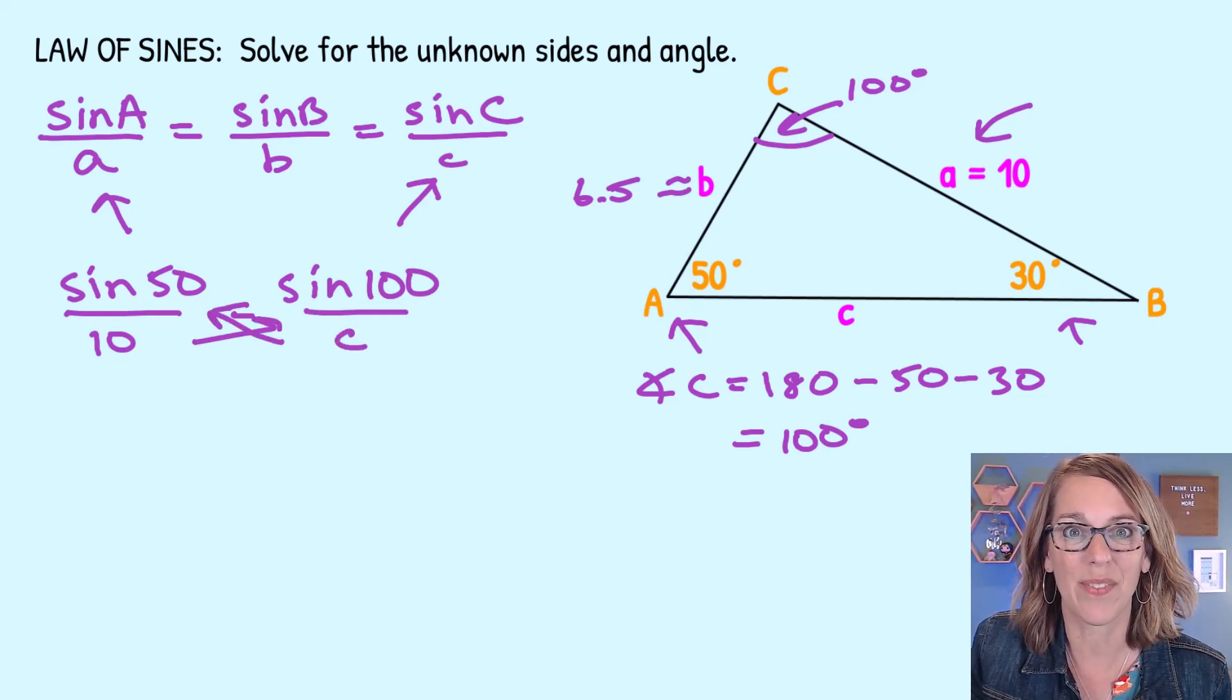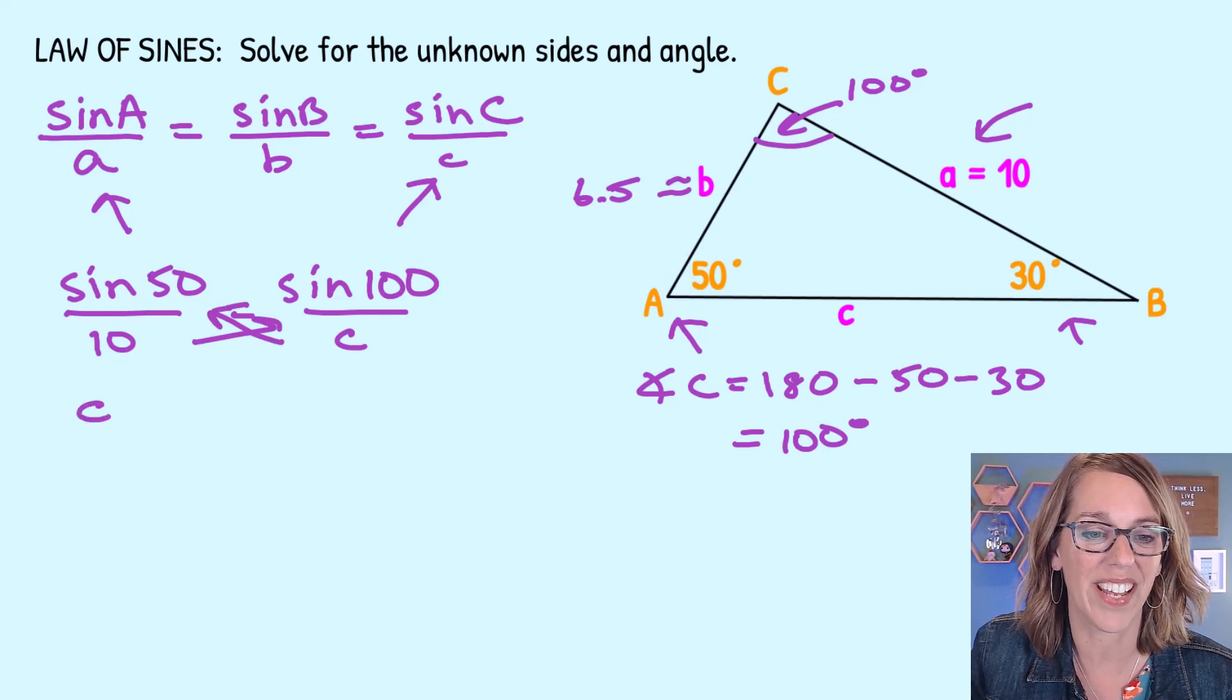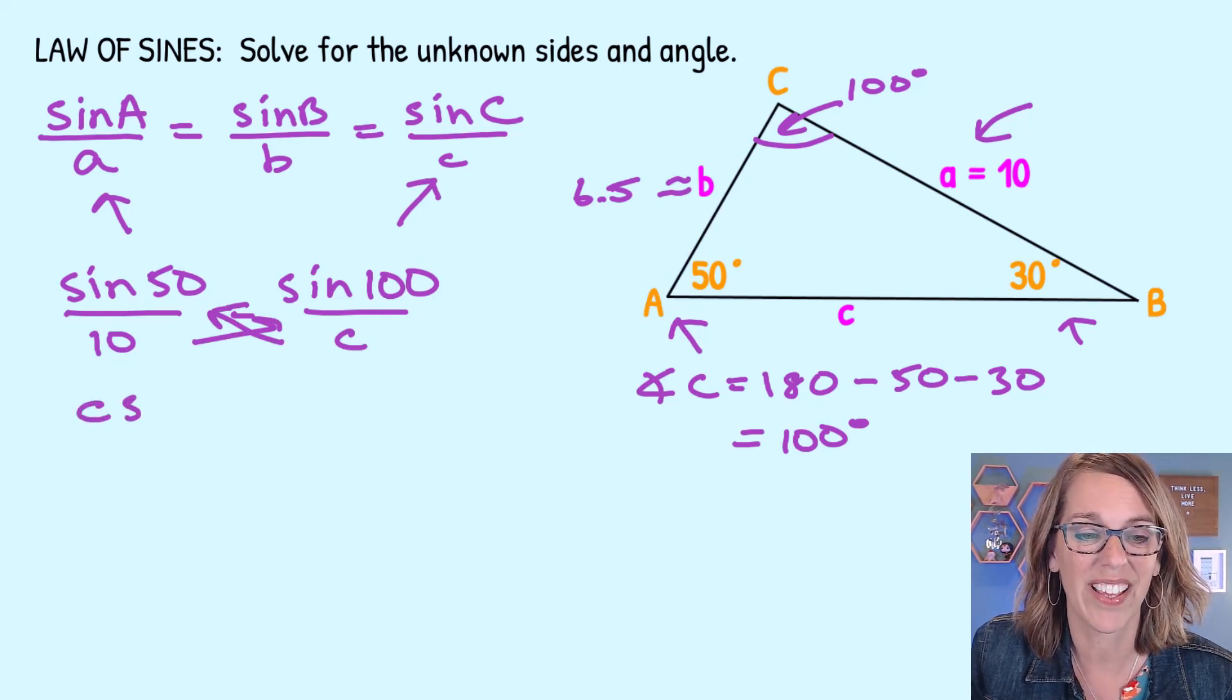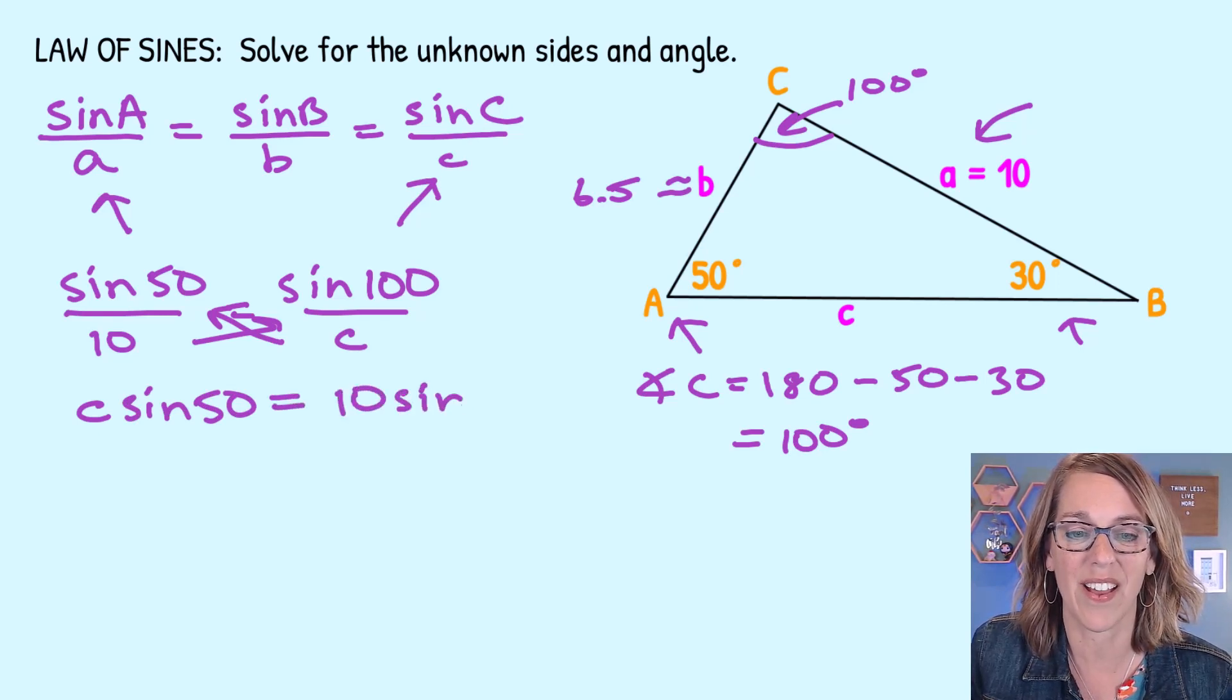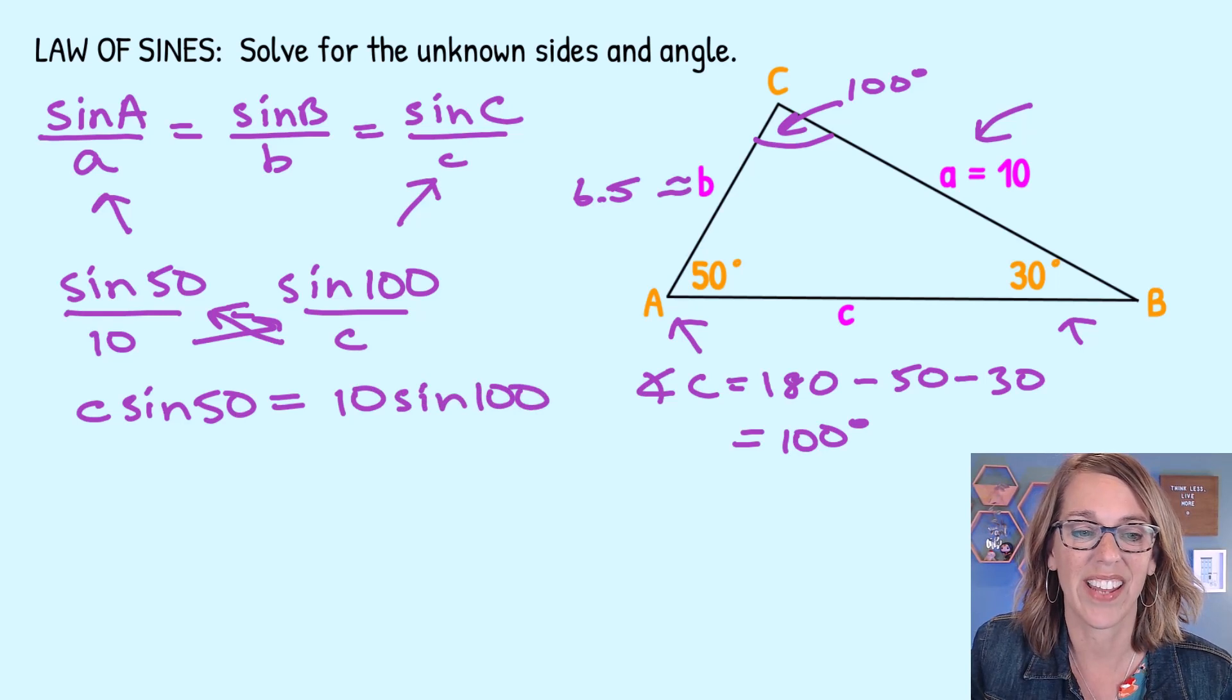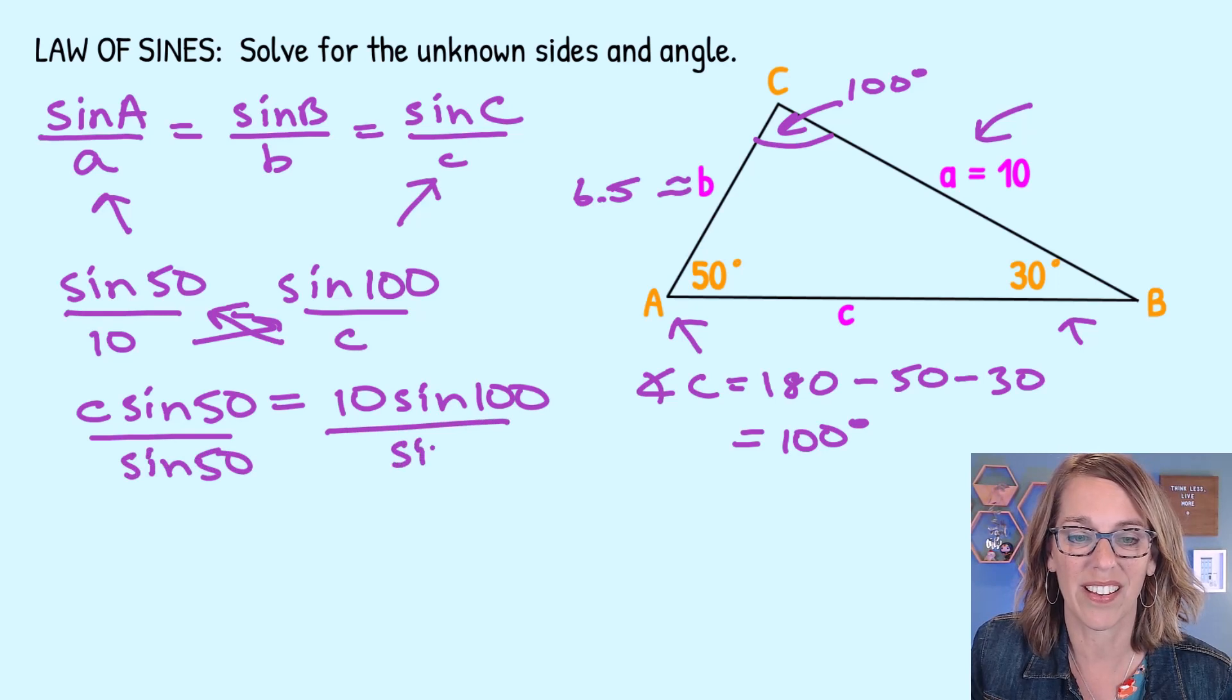This is going to look really familiar because I'm going to do the same process. I'm going to cross multiply. C times sine 50 is equal to 10 times the sine of 100. And I can divide both sides by that sine of 50.